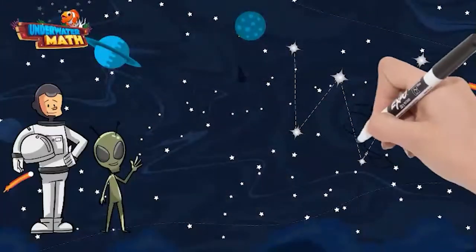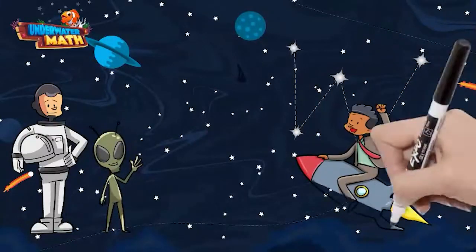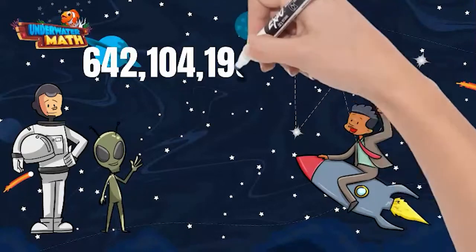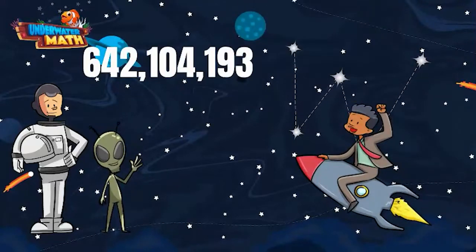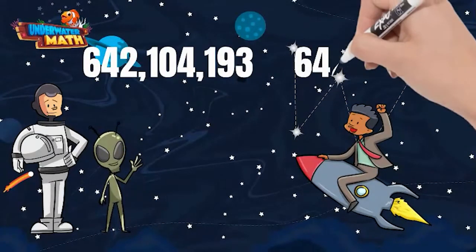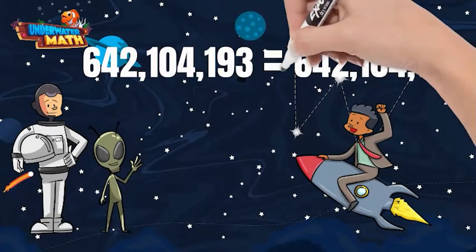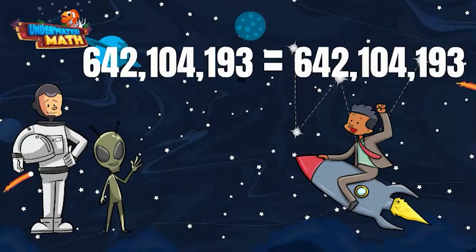One more example for you today. Marcus has been riding around on his rocket through space. Last week he rode 642,104,193 miles. This week, he rode 642,104,193 miles. Which comparison symbol goes in between these two numbers? That's right — these two numbers are equal, and the equal symbol goes in the middle.